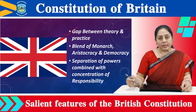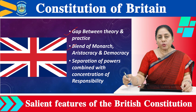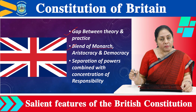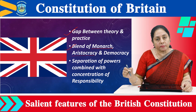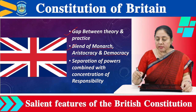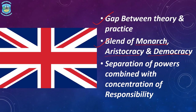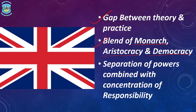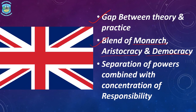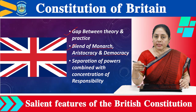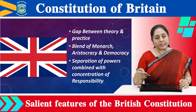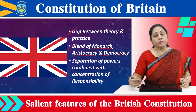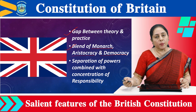The next feature is the blend of monarchy, aristocracy, and democracy. Monarchy, aristocracy, and democracy are each different kinds of government, but all these combinations can be viewed in Britain. They have monarchy where the king is hereditary. The upper house, the House of Lords, represents aristocracy, and its members are from royal blood as well as the nobility.